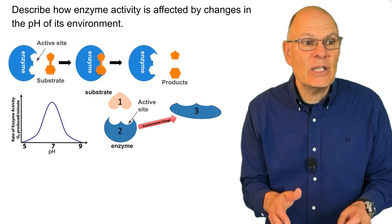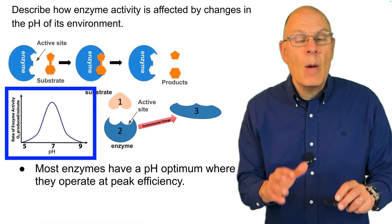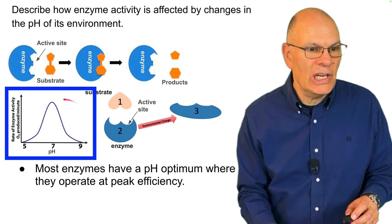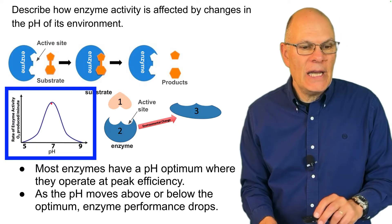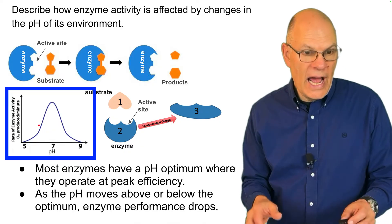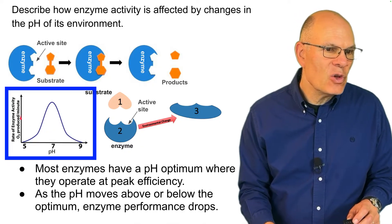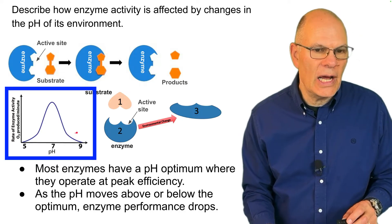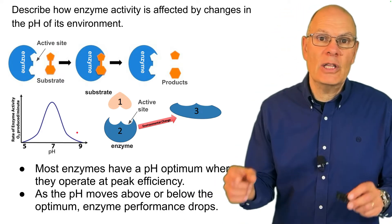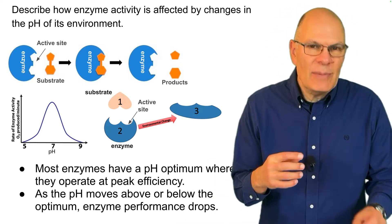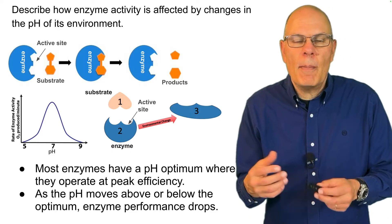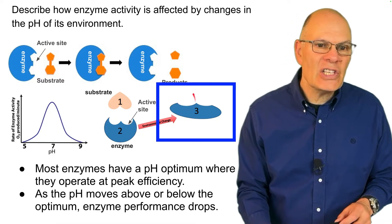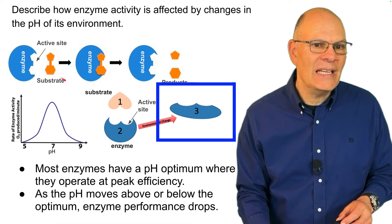Describe how enzyme activity is affected by changes in the pH of its environment. Most enzymes have a pH optimum where they operate at peak efficiency — that optimum is shown here. As pH moves above or below the optimum, enzyme performance drops, as you can see in this graph of the rate of enzyme activity. Why? Because enzymes are proteins — if you change the pH, you disrupt the bonds that hold that protein in its specific shape. The result is denaturation and a less good fit between the enzyme and its substrate.